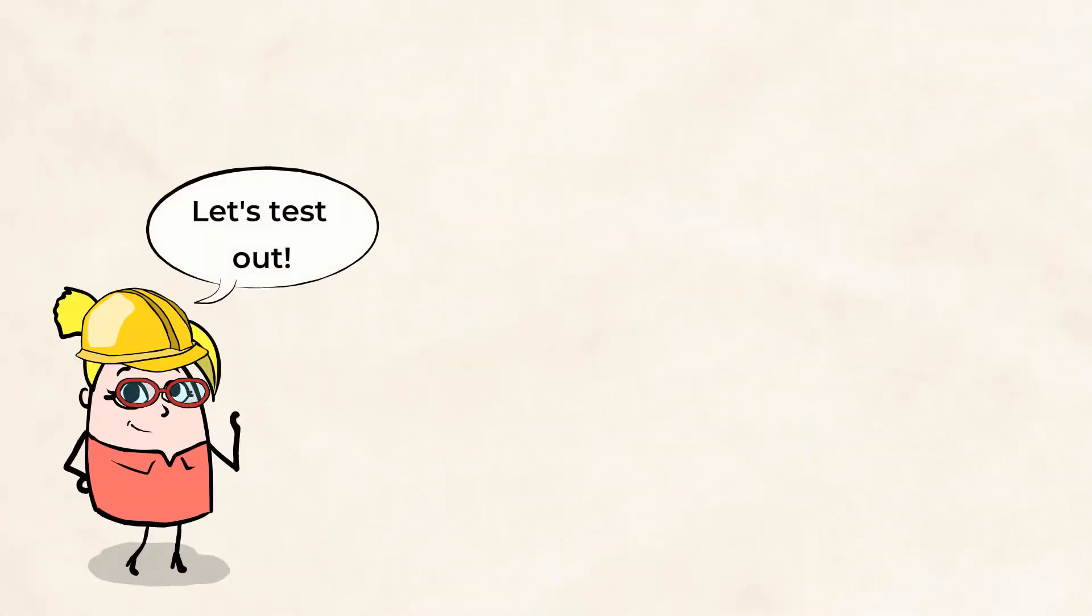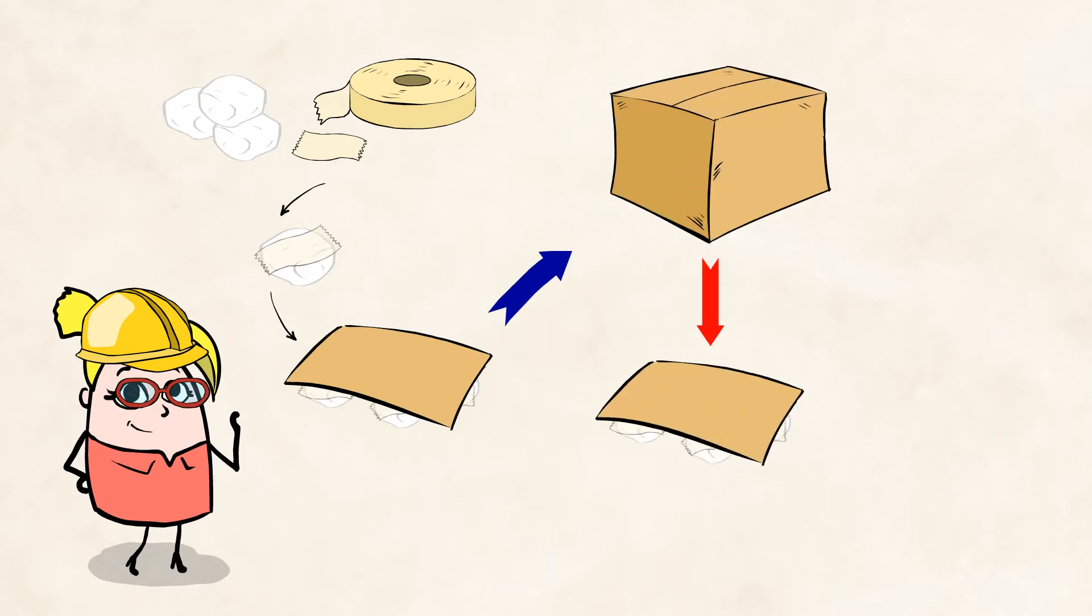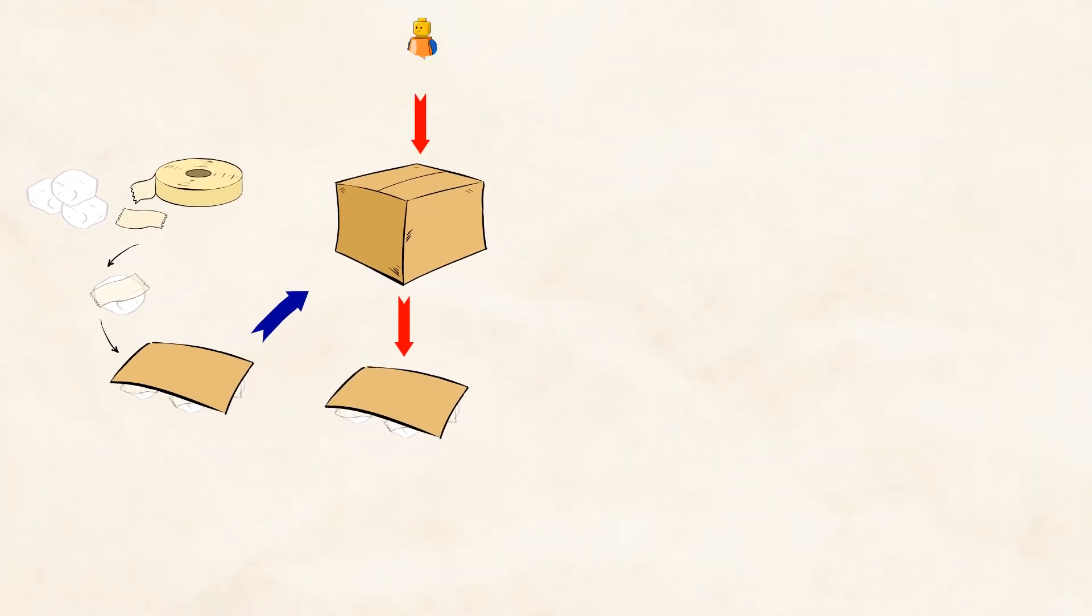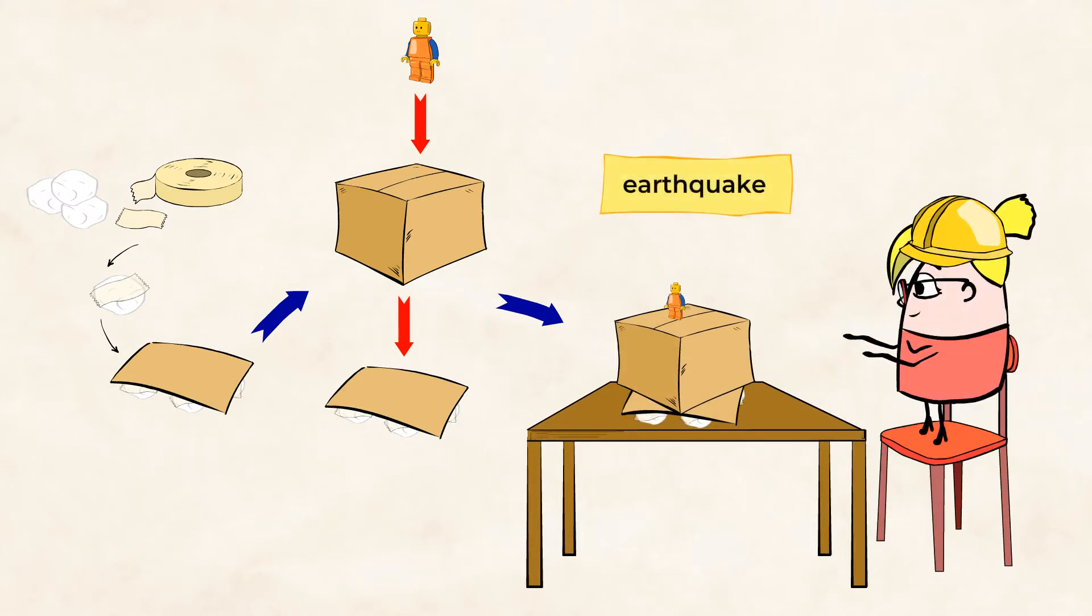Let's test out one material at a time by attaching them to the base of the building. For example, we can take the cotton balls and tape them to the base. Next, we'll place the box on top of the base, with the cotton balls touching the desk and the Lego figure on top of the box. We'll put our design onto a desk or table. And now, we'll create an earthquake. An imaginary one, of course. Here we go.